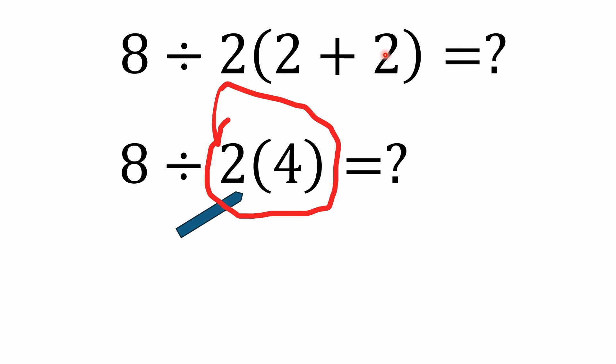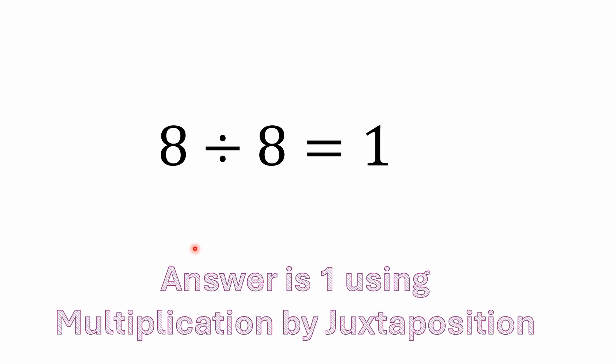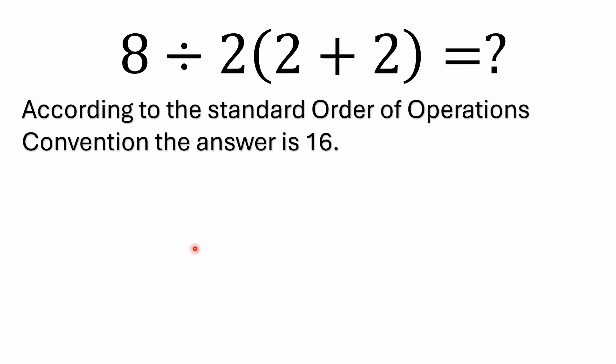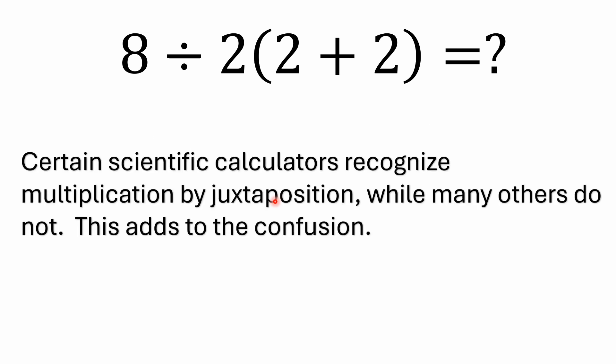Now some people just blindly solve left to right, which would be incorrect. According to the standard order of operations, which does not take into account implicit multiplication, the answer would be 16. The reason would be because you do the 2 plus 2 first, which is 4, but then the next operation you go left to right: 8 divided by 2 is 4, 4 times 4 is 16. So that makes perfect sense. That's not recognizing implicit multiplication.